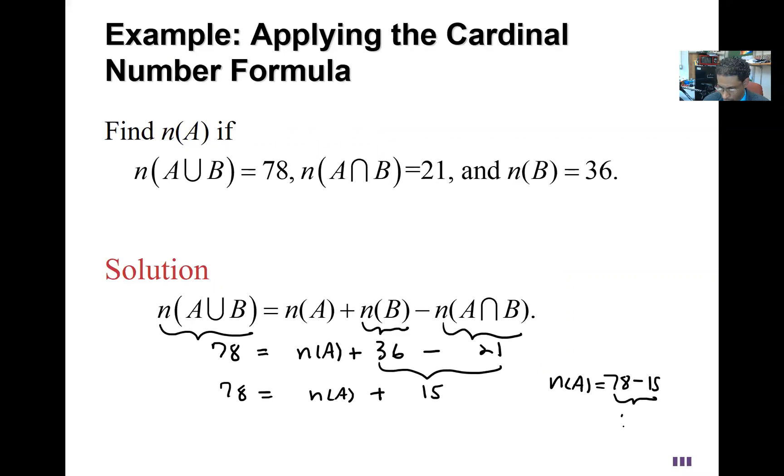So 63 is the answer to the question. It's called the cardinal number formula, and it relates the intersection, the union, and the entire sets A and B.